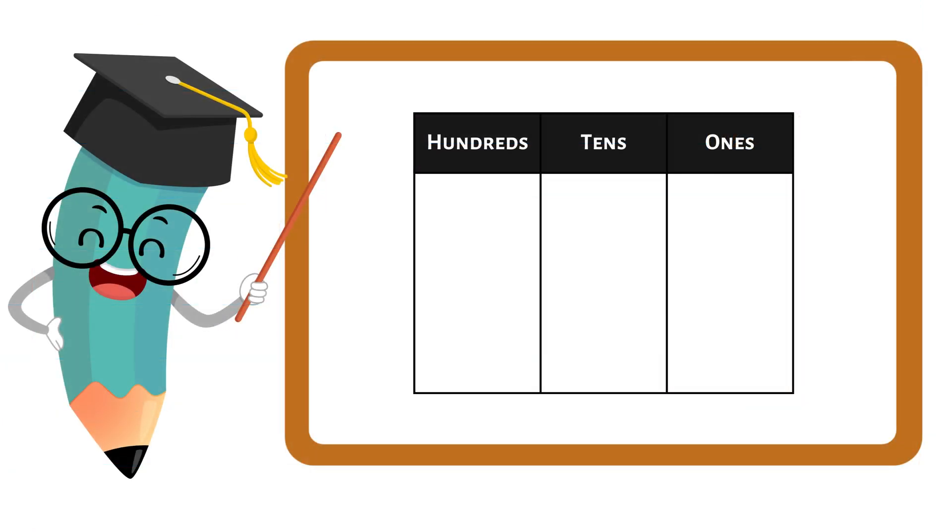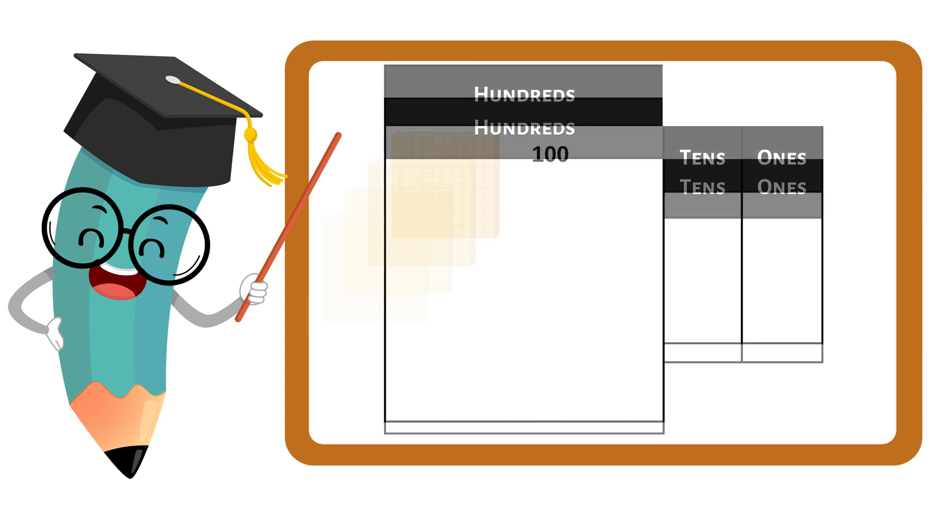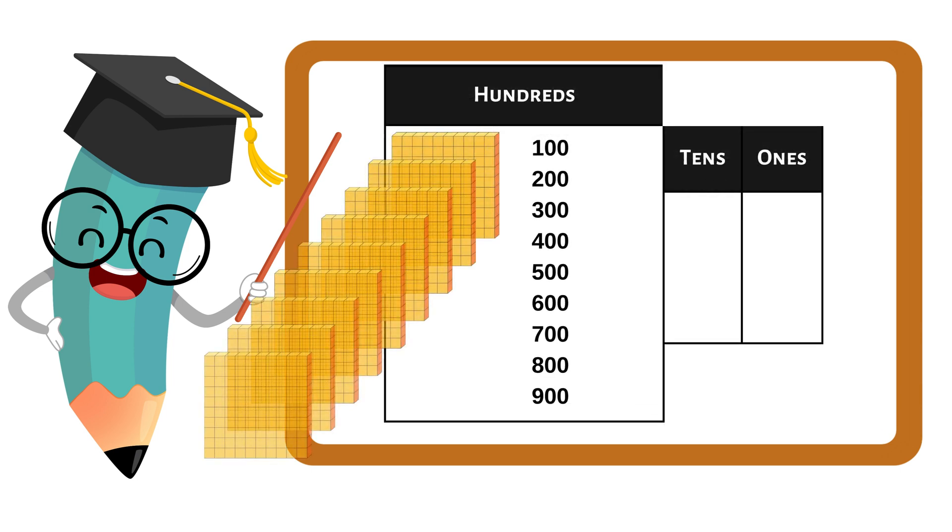Let's break it down. We have three superhero digits: hundreds, tens, and ones. First up, meet the hundreds. They're the big bosses of our number world. When you see a digit in the hundreds place, it tells you how many groups of 100 we have. One, two, three, and so on. It's like counting in hundreds.